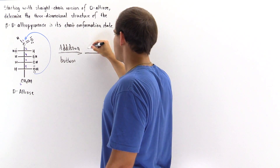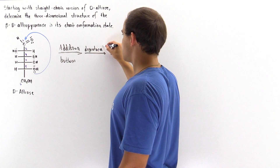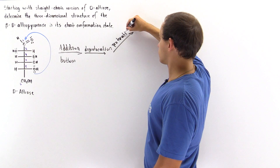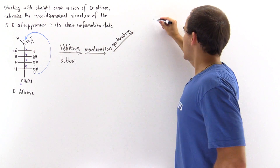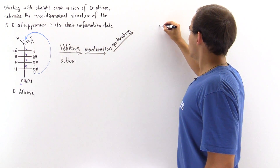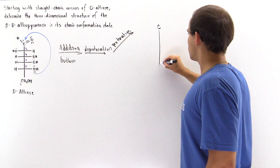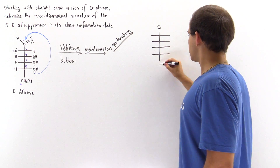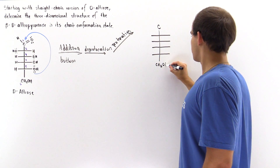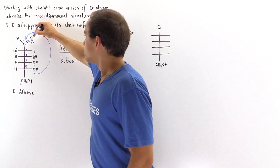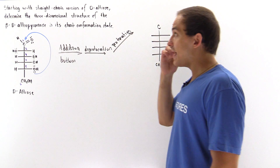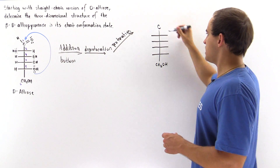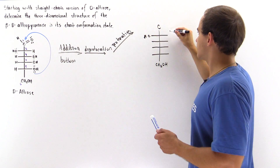After the deprotonation and protonation steps, we basically form our molecule. Carbon number one is here, then carbon number two, three, four, five, and six. In the case of the formation of the beta anomer, our OH that is formed will point in the opposite side of our ring oxygen. So the OH will point in this direction and the H will be here.